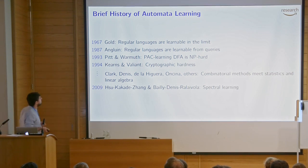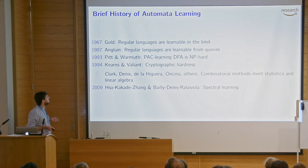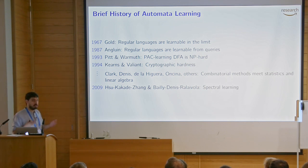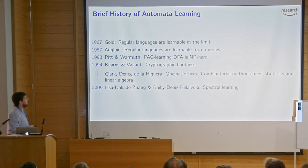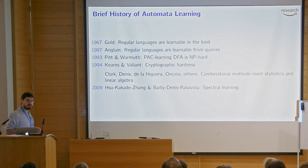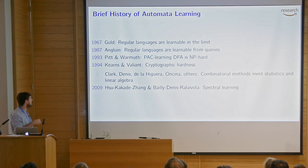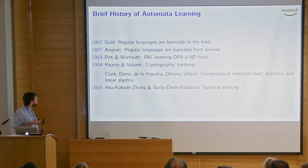The first thing you can find in the literature is this result by Gold in '67, where he showed that you can learn regular languages in the limit. Learning in the limit is one way of formalizing learning — it's not used today because it's quite unrealistic, but it was one of the first results in learning theory. Then Angluin refined this.